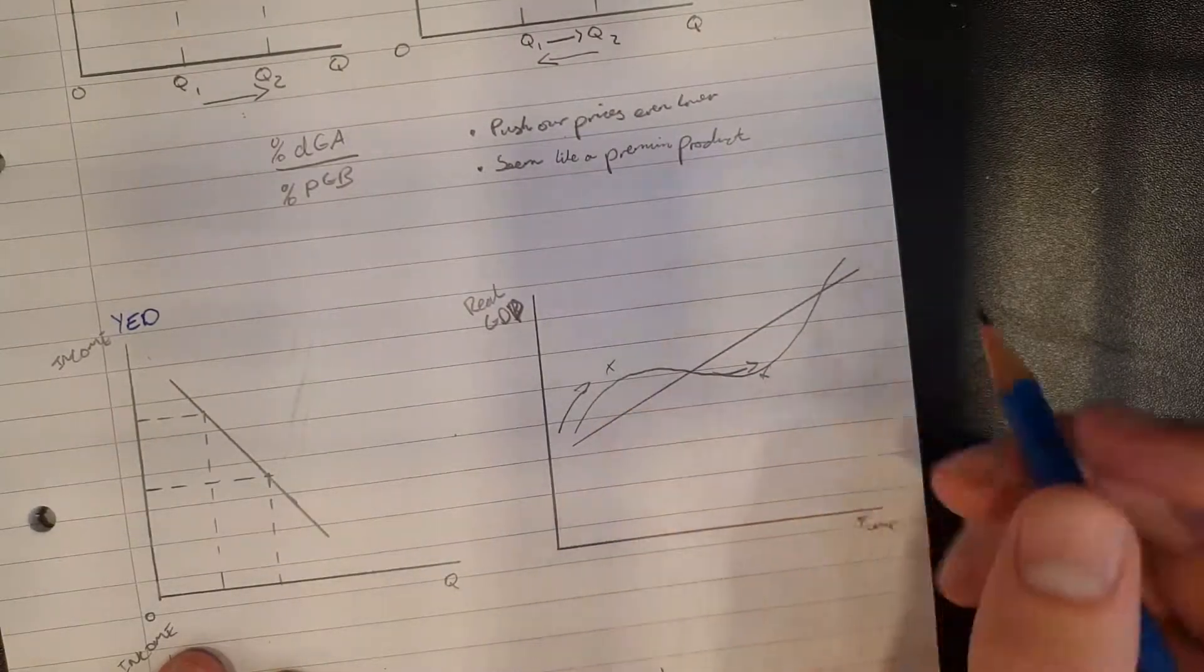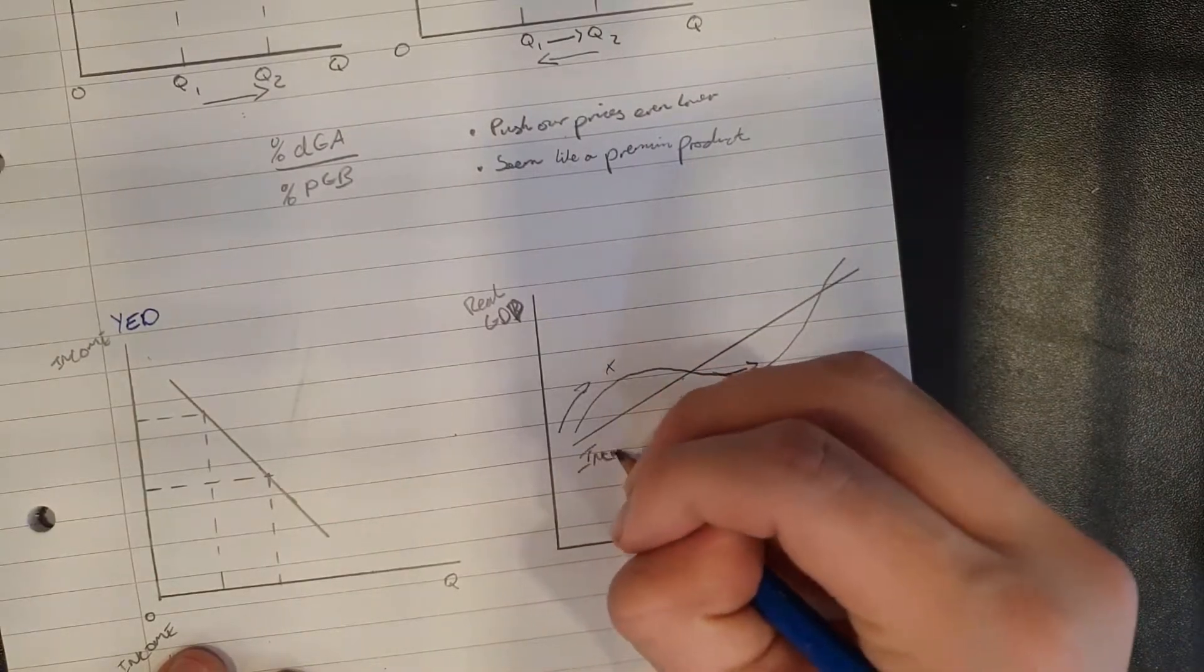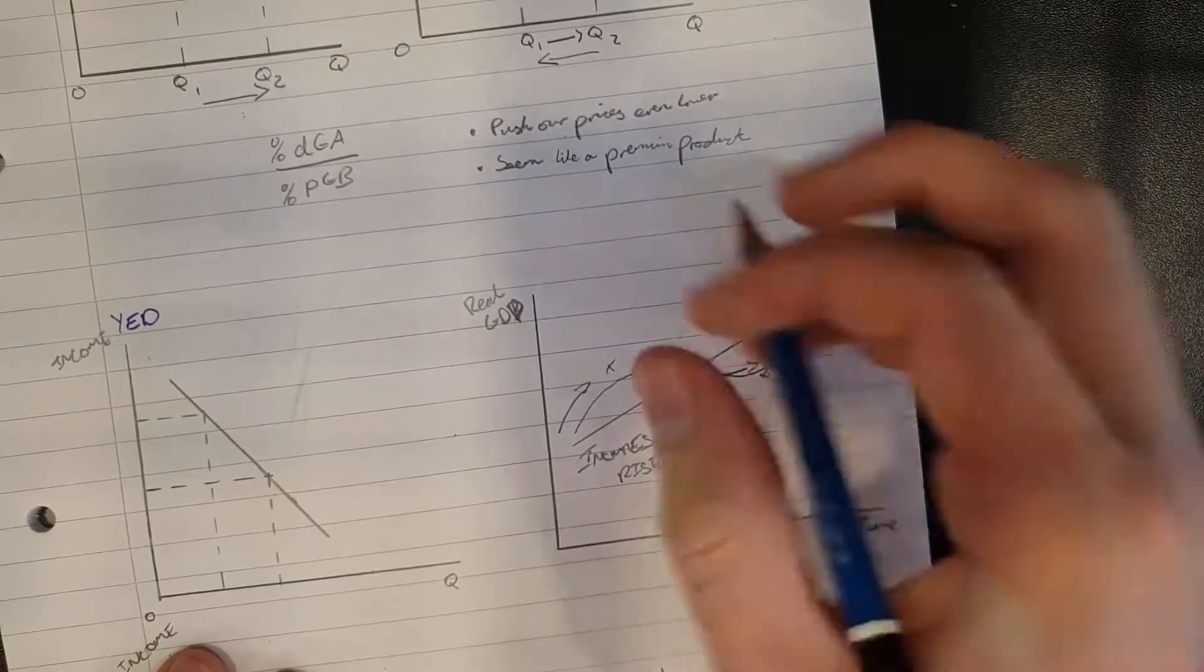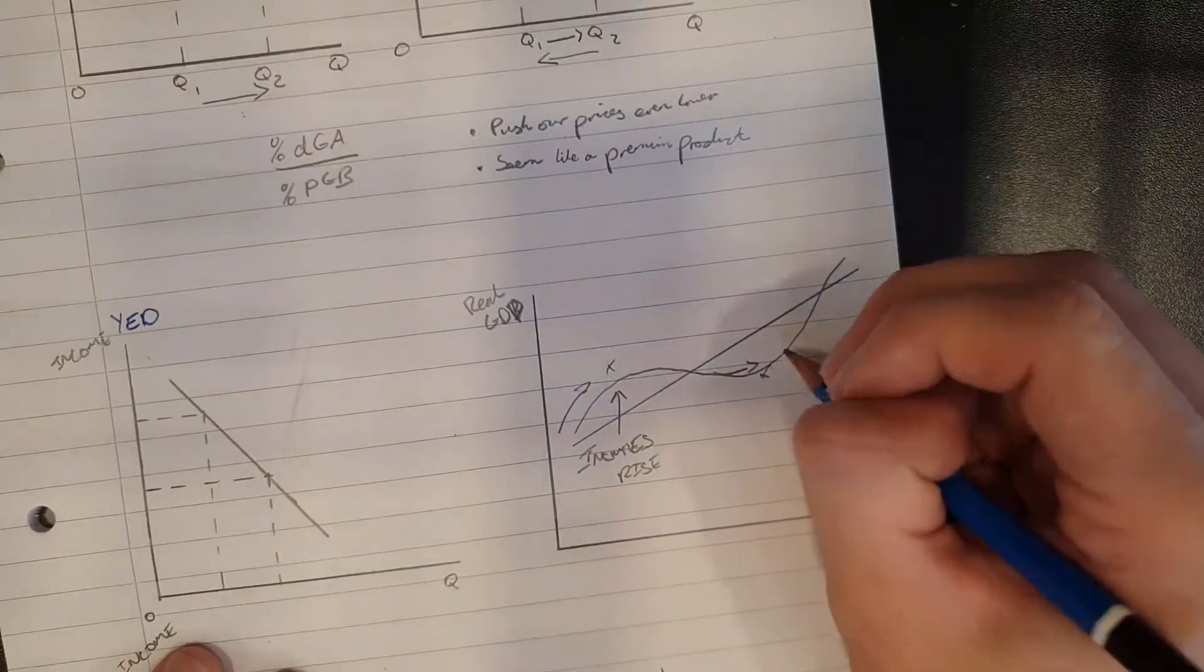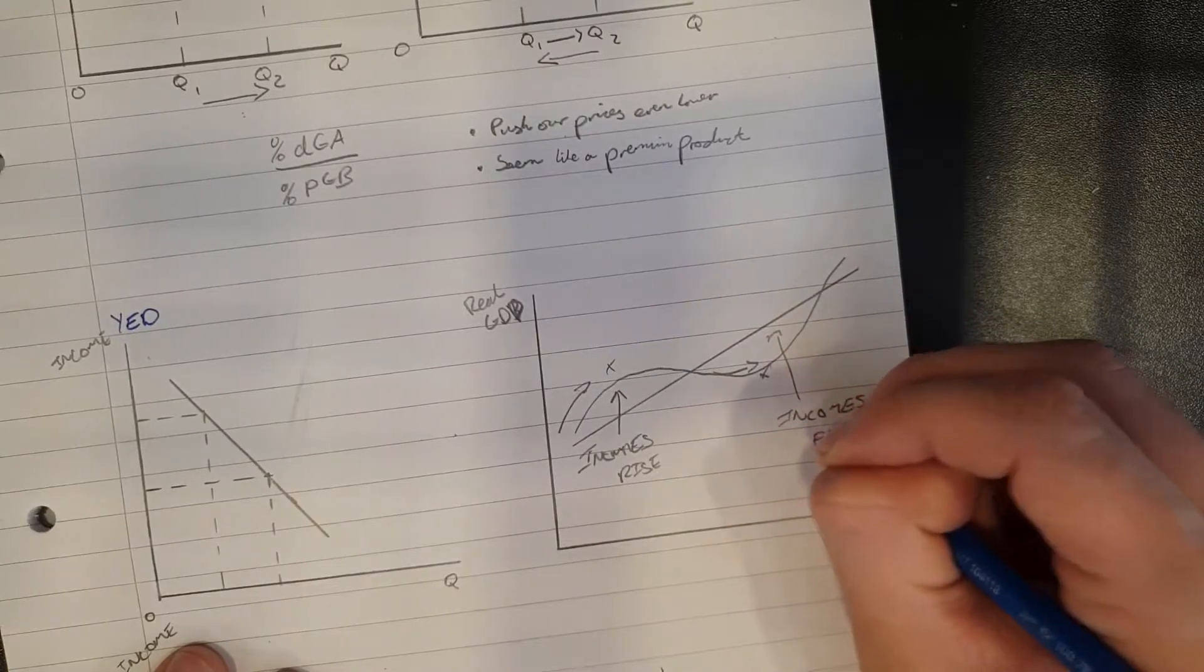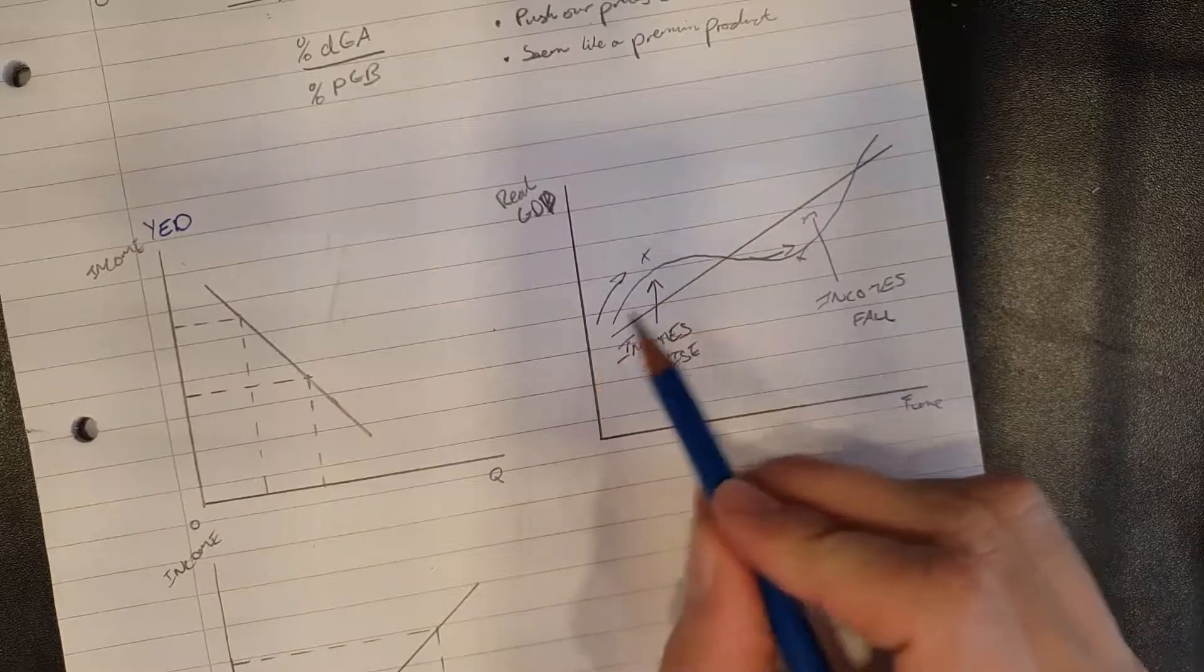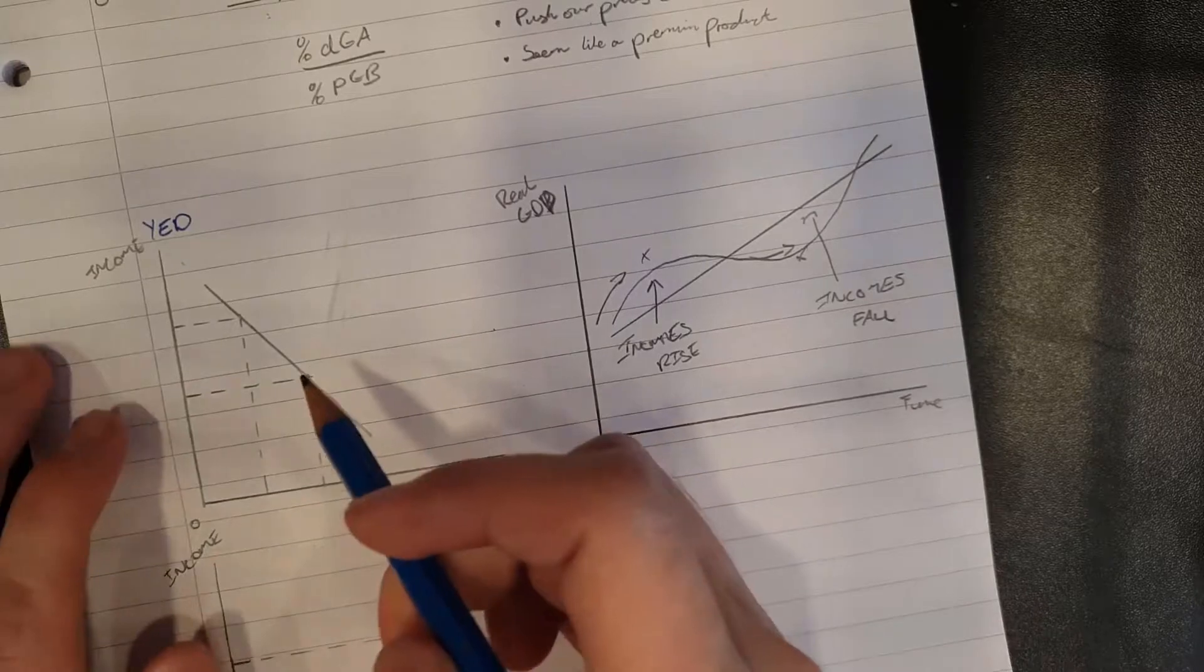Now in a boom, what happens is that incomes rise here. Incomes rise. The average wage of any worker will rise in this section. And similarly, incomes will fall there.